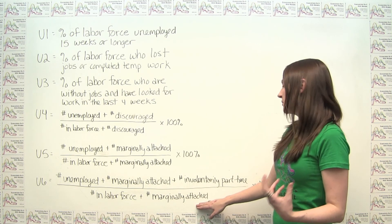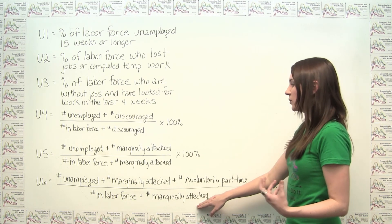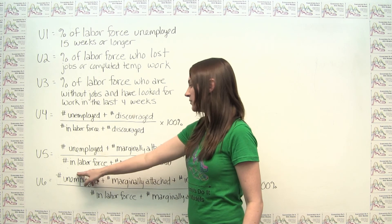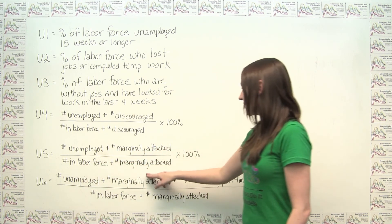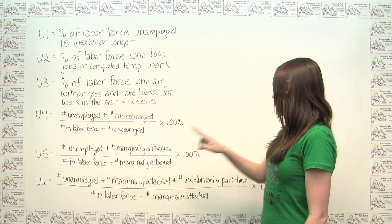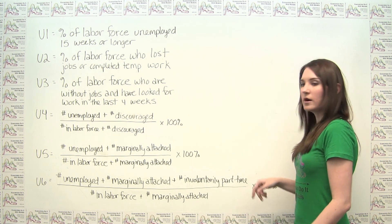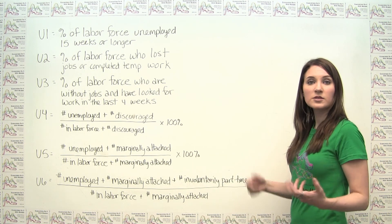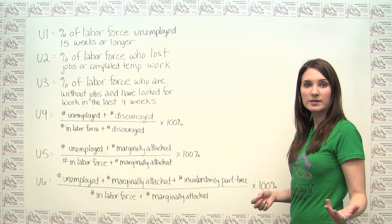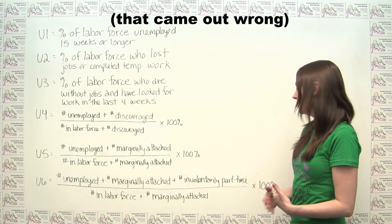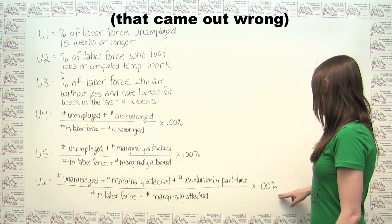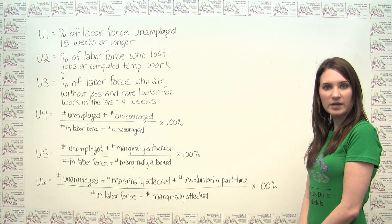As a measure of unemployment in U6, we take those people traditionally counted as unemployed, add in the marginally attached workers, and add in those who are underemployed in the sense that they're working part-time against their will, then take that ratio and multiply by 100%.